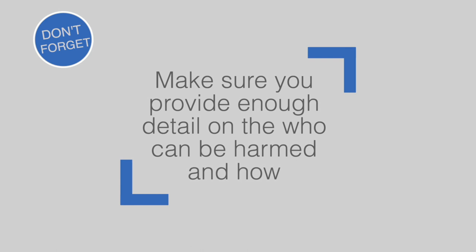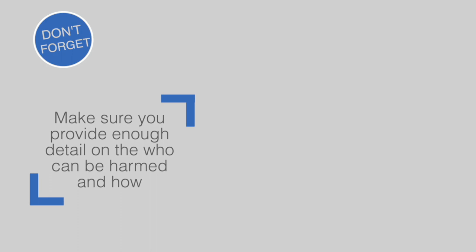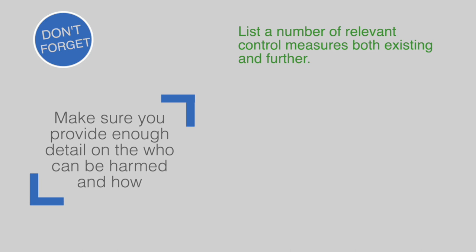When completing this section, make sure you provide enough detail on who can be harmed and how. Do not just say people will receive injuries — explain the type of injuries or ill health and how these will occur. Ensure you list a number of relevant control measures both existing and further. Ensure you cover both physical and procedural controls. Don't forget to use your resources and books to help determine controls that are relevant to the hazard.